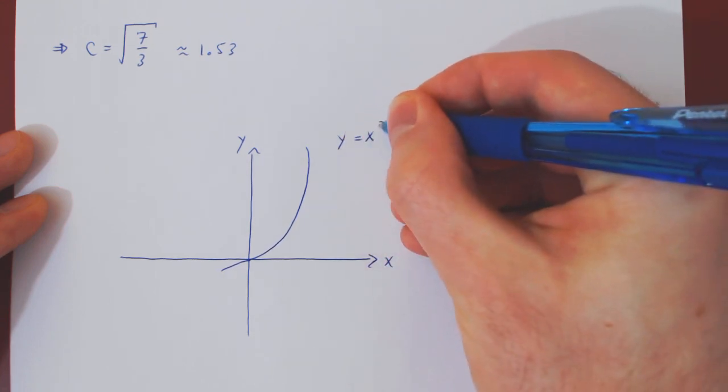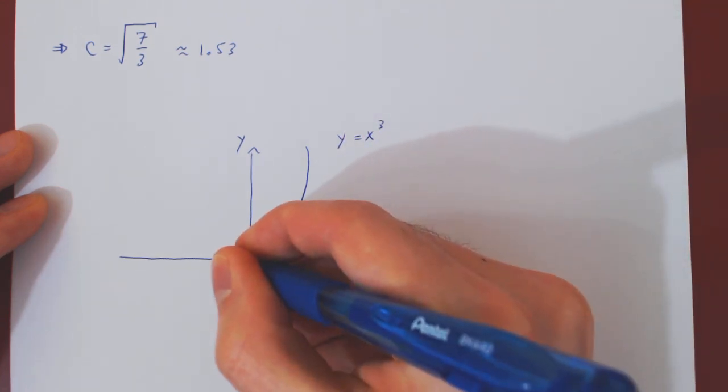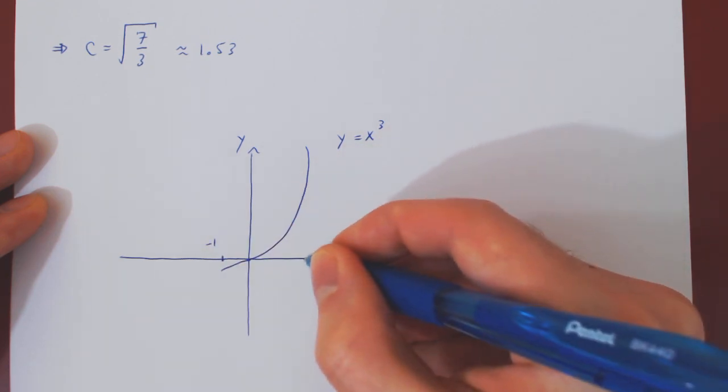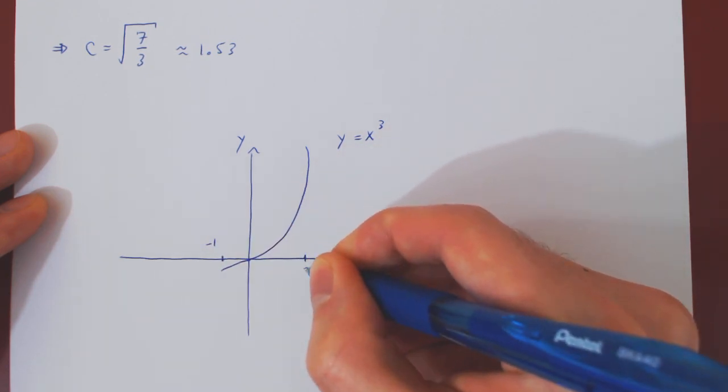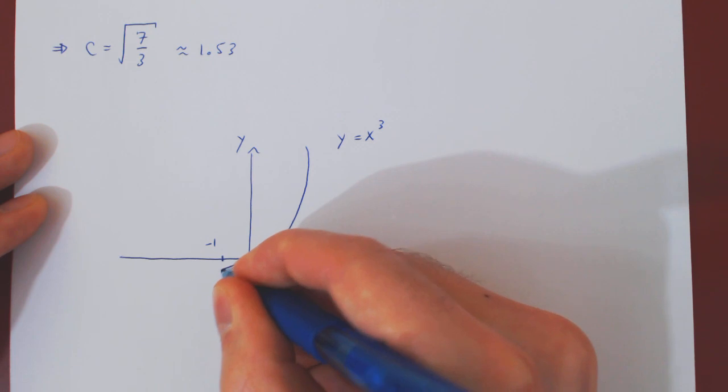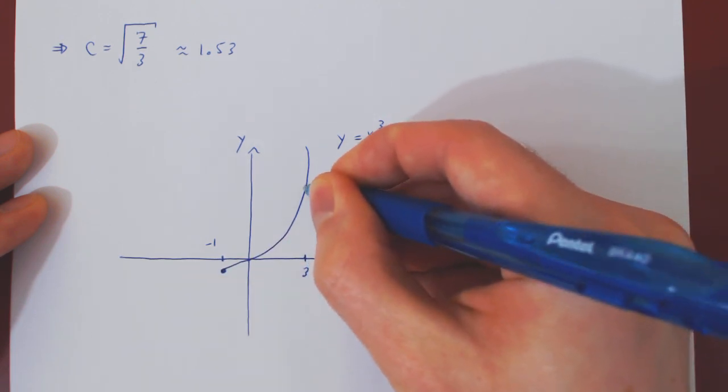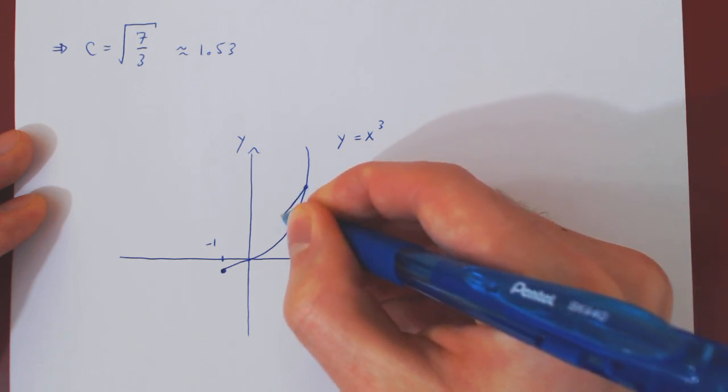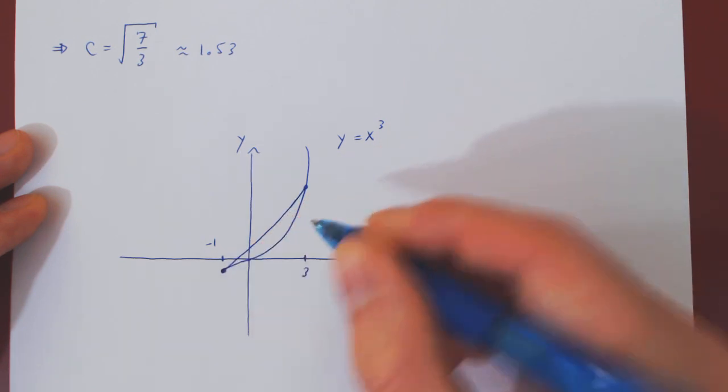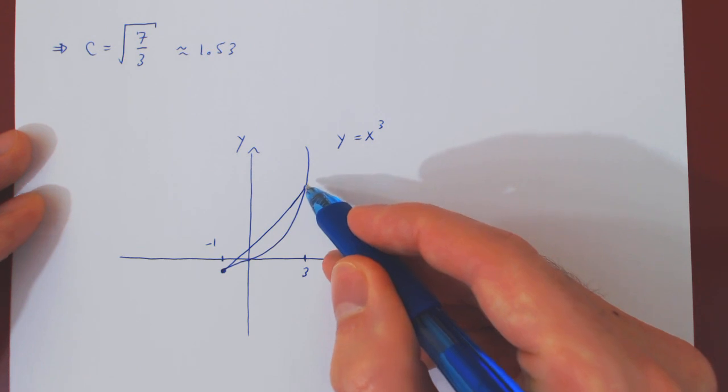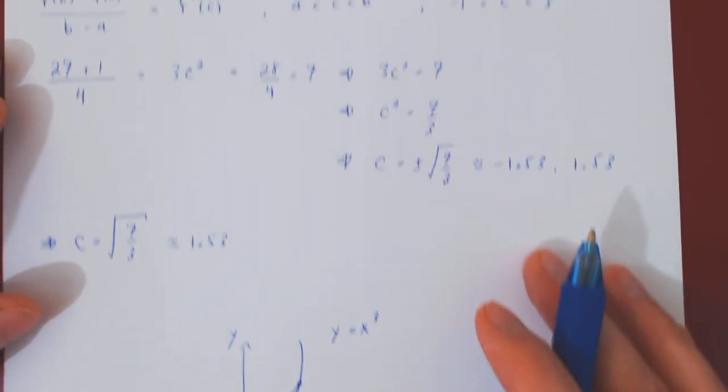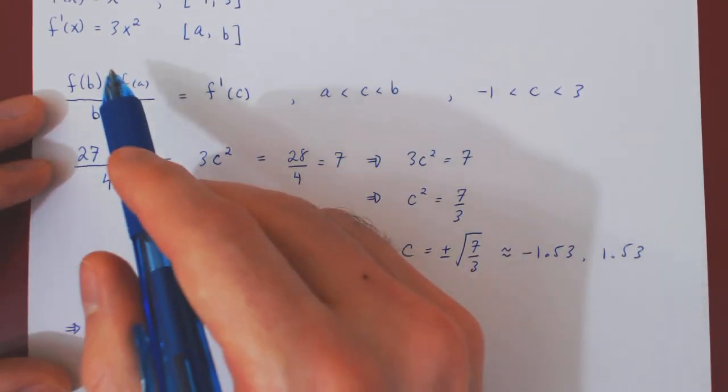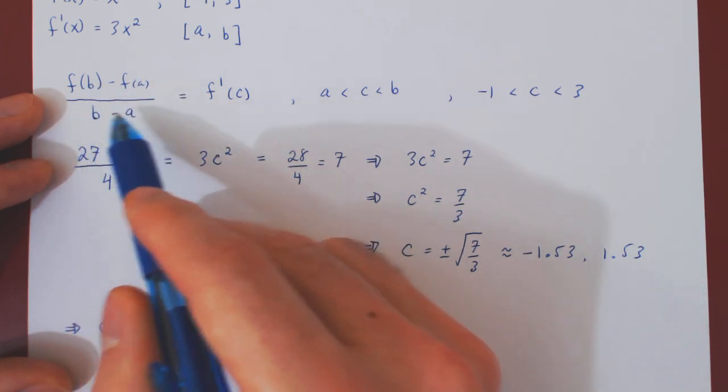So x cubed looks approximately like this. Suppose this is negative 1, and this is positive 3. We can connect both points. And, of course, the slope of this line is the average slope of the function on the interval, which is exactly f of b minus f of a over b minus a.